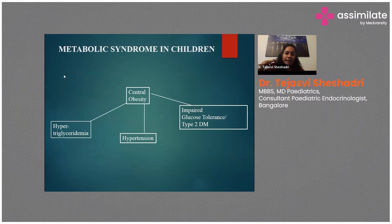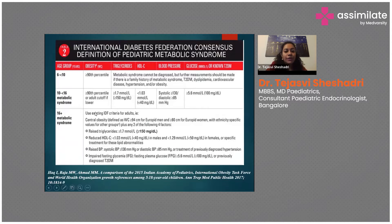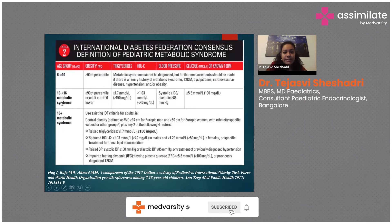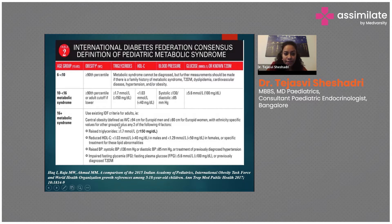Coming to metabolic syndrome — what exactly is metabolic syndrome? Metabolic syndrome is obesity associated with dyslipidemia, hypertension, and type 2 diabetes. The diagnostic criteria: we only diagnose children more than 10 years of age. It is defined as central obesity based on waist circumference plus any two of the four: raised triglycerides, reduced HDL, hypertension or increased blood pressure, and type 2 diabetes.